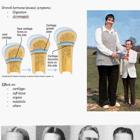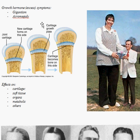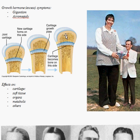Looking at growth hormone excess symptoms: if a tumour occurs in childhood, the long bones have growth plates that allow vertical extension. If there is excessive growth hormone before these growth plates fuse, the long bones will continually grow excessively long — as you can see in this picture of a person with gigantism.